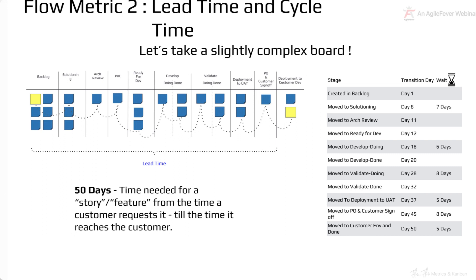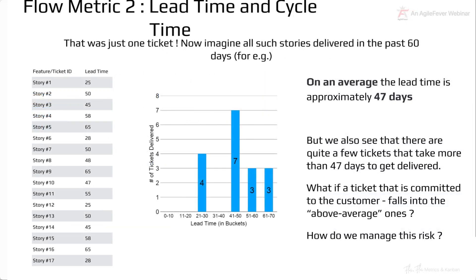On the right-hand side, there's a table showing how long the ticket spent in each phase. The ticket was created on day one, moved to solutioning on day eight — waiting in backlog for about seven days — then moved to architecture review on day 11, ready for dev on day 12, development doing on day 18, spending about six days waiting in ready for development, and so on. It takes about 50 days from the time the customer requested it to when it reaches their hands.